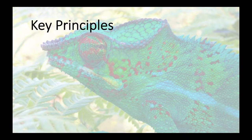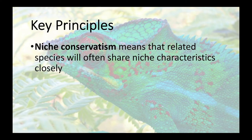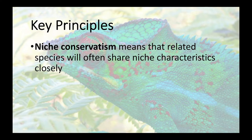I want to give you first two key principles that if they're not both in place then this won't work. First is the idea of ecological niche conservatism in evolutionary time frames. There has to be some inertia, some conservatism in the characteristics of niches. We're not going to be able to use related species or conspecific populations to predict where the unknown species or populations are located.